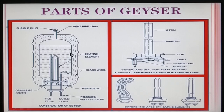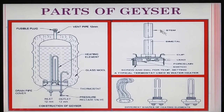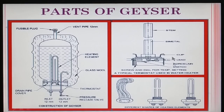The glass wool is used to avoid heat loss from the tank and to insulate the outside body. There is a bimetallic thermostat with an iron box and a stem.